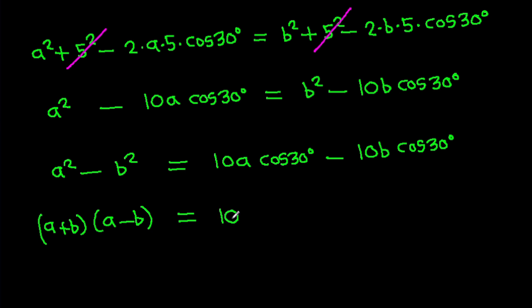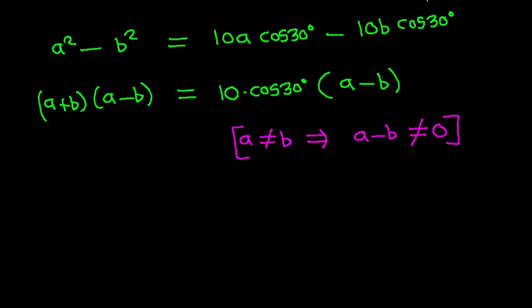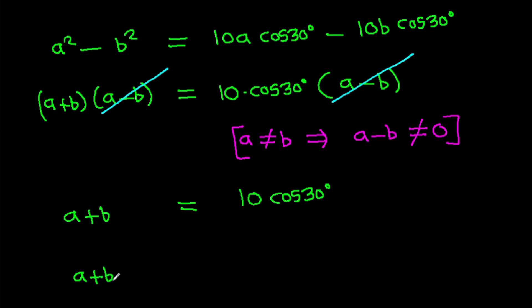So A squared minus B squared equals 10A cos 30 degrees minus 10B cos 30 degrees. We can factor both sides: (A minus B)(A plus B) equals 10 cos 30 degrees times (A minus B). Since A is not equal to B, A minus B cannot be zero, so we can cancel (A minus B) from both sides. Therefore A plus B equals 10 cos 30 degrees equals 10 times root 3 over 2, which equals 5 root 3.